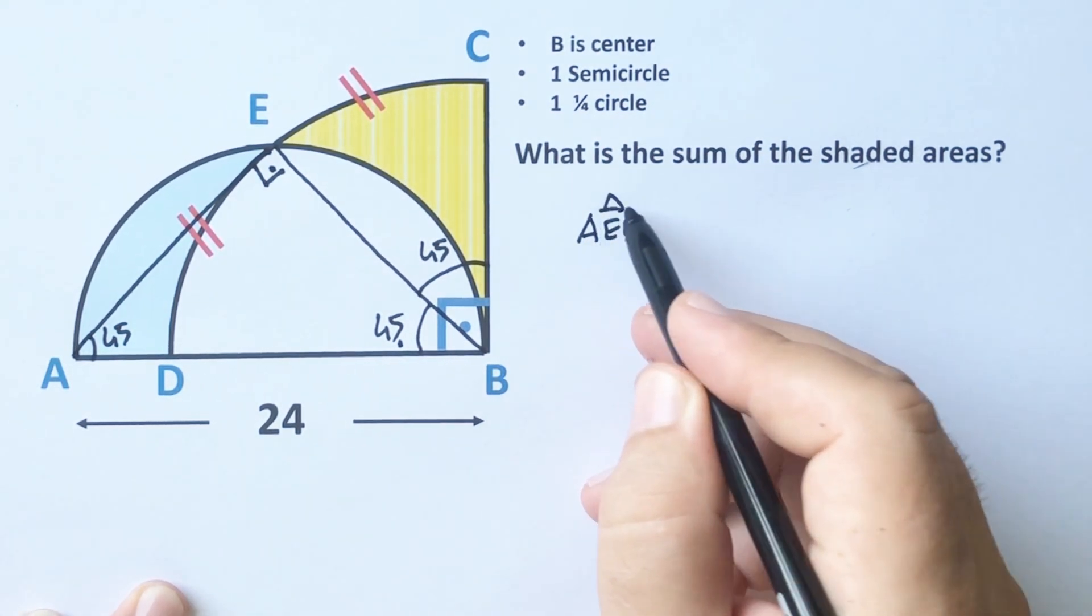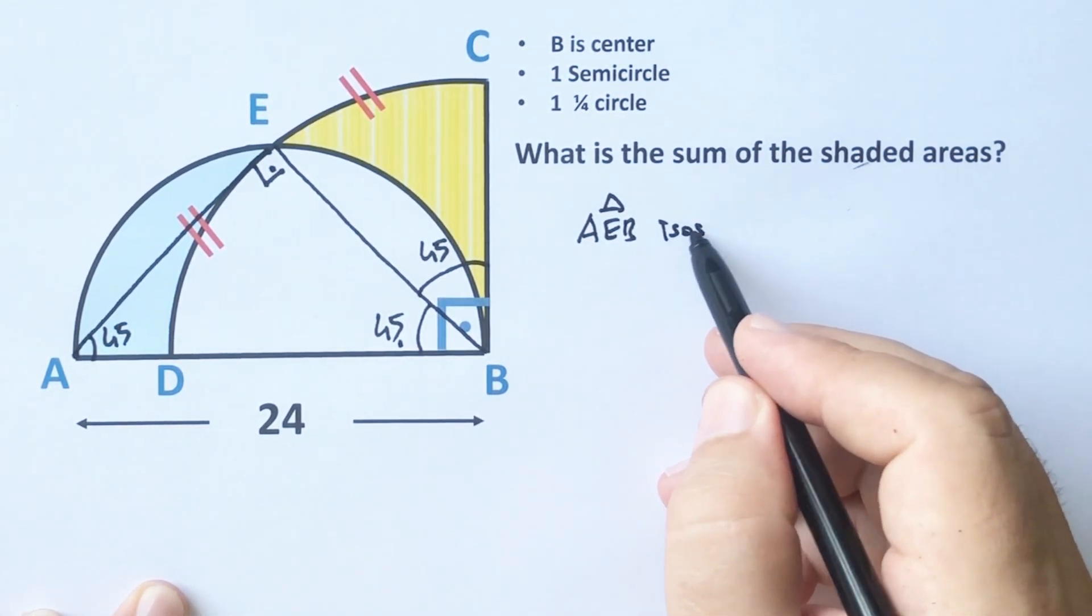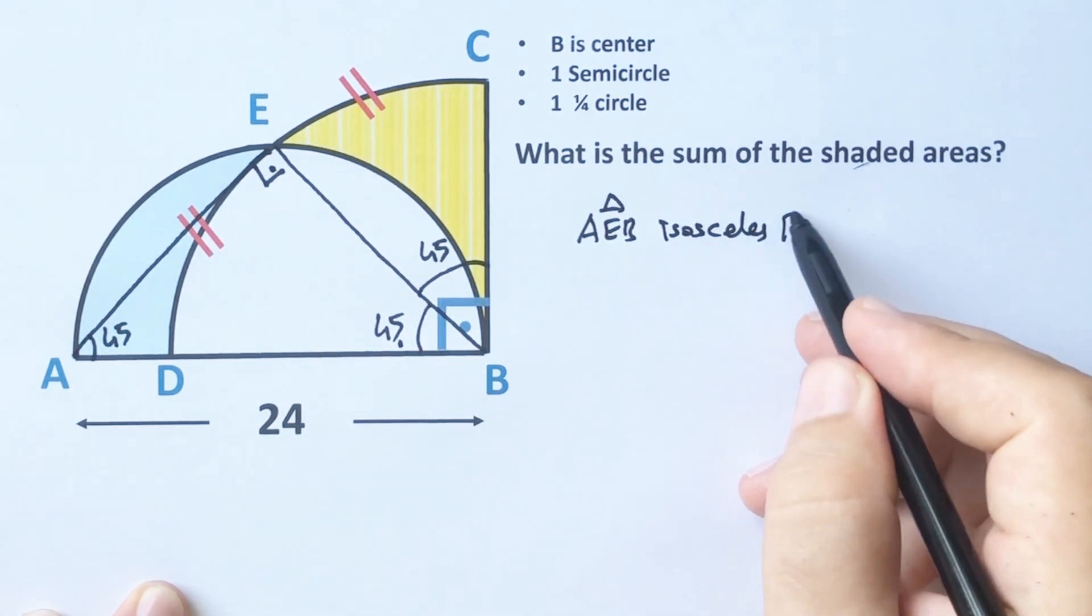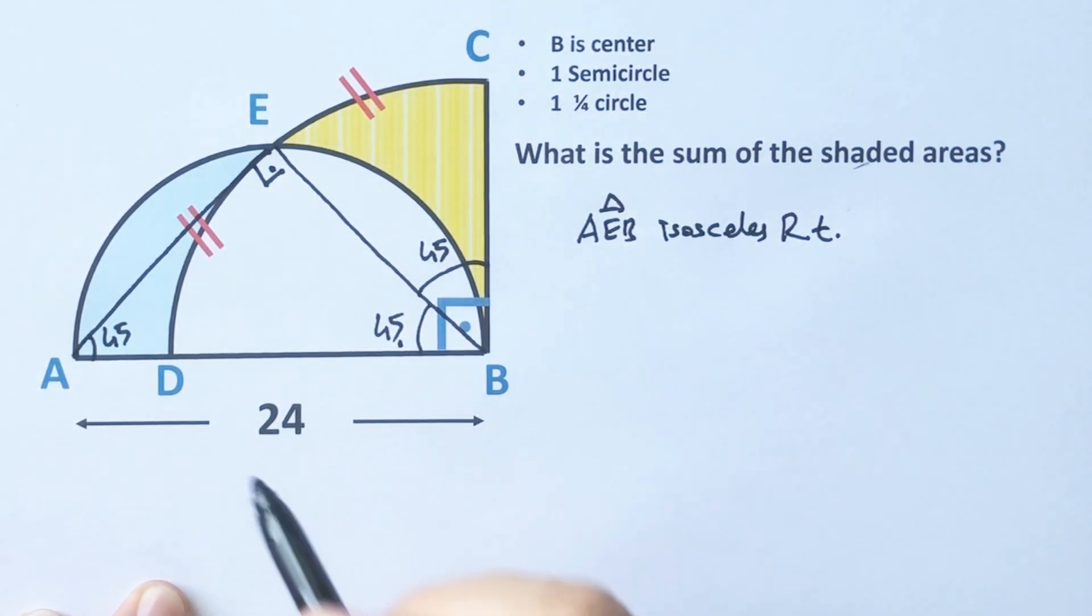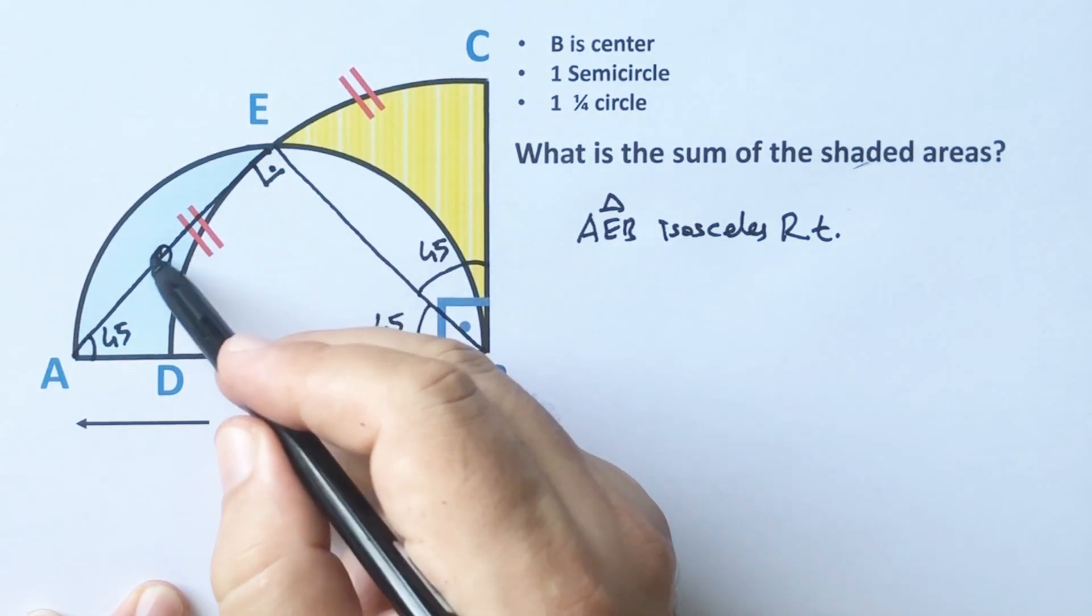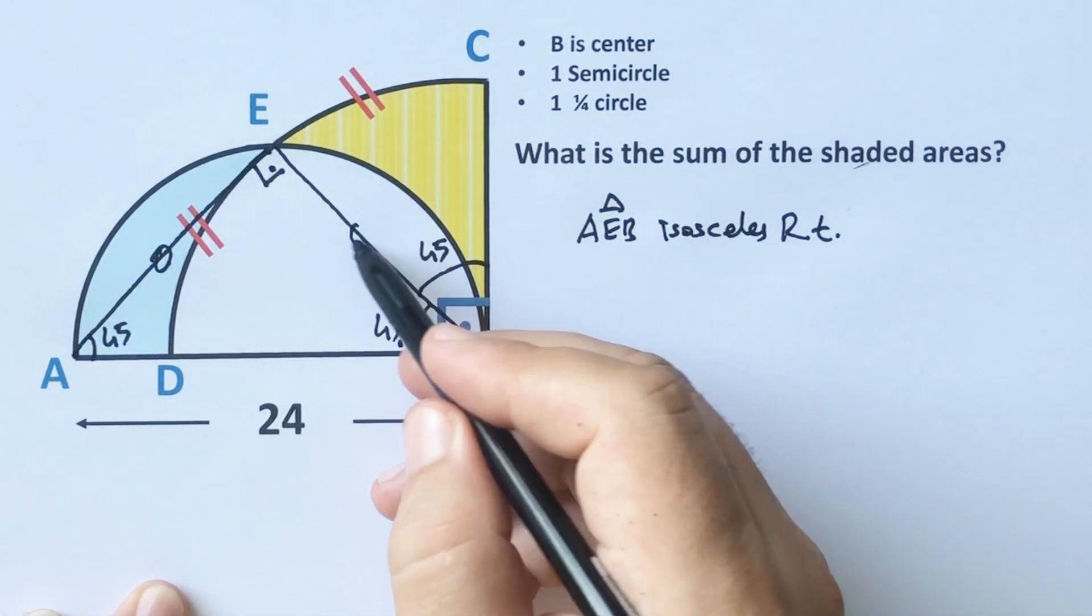Therefore here must be 45 degrees. Notice that we get an isosceles right triangle. Therefore AE must be equal to EB.